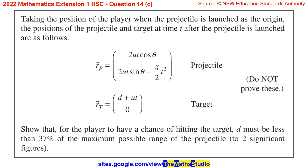Taking the position of the player when the projectile is launched as the origin, the positions of the projectile and target at time t after the projectile is launched are as follows. Vector rp has horizontal component 2ut cos(theta) and vertical component 2ut sin(theta) minus g/2 times t squared, which is for the projectile. Vector rt has horizontal component d plus ut and vertical component 0 for the target. Do not prove this. Show that, for the player to have a chance of hitting the target, d must be less than 37% of the maximum possible range of the projectile to two significant figures.